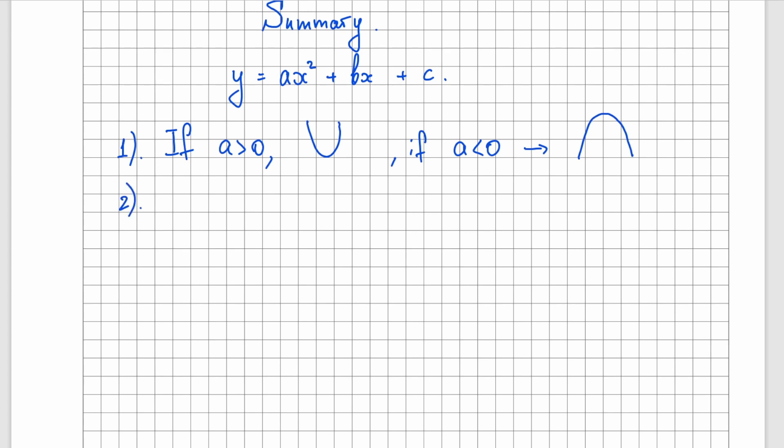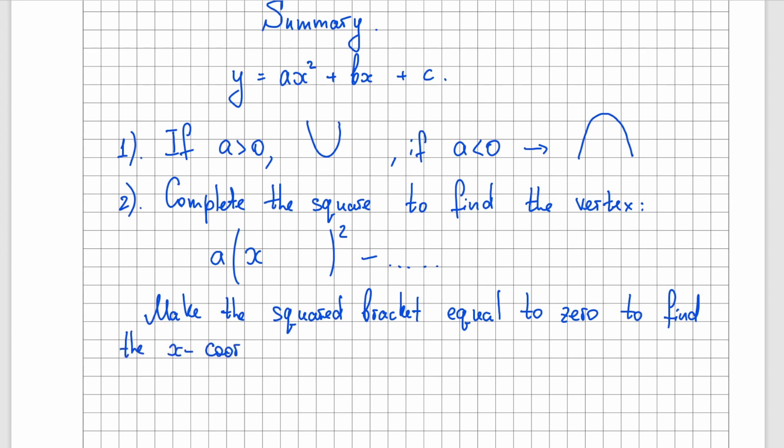Now to find a vertex, which is the top part or the bottom part, in each case, you'll have to complete the square. You will get something similar to this. Some number outside, a square bracket, and something outside. To find the x-coordinate of the vertex, you'll have to make the square bracket equal to 0. Now to find the y-coordinate of the vertex, you'll have to substitute the x-coordinate, which you just received, into the equation.